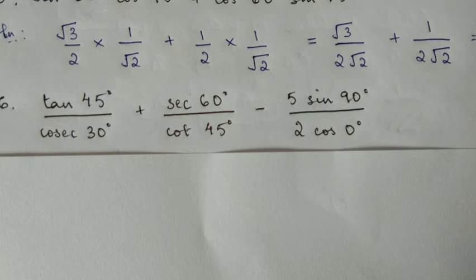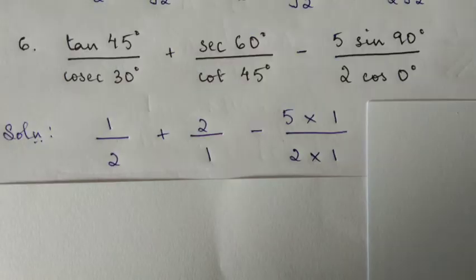We substitute: 5 times sin 90° which is 1, and 2 times cos 0° which is 1. This becomes 1 over 2 plus 2 over 1 minus 5 into 1 divided by 2 into 1.